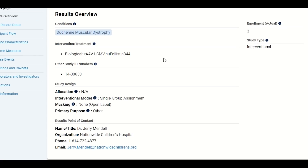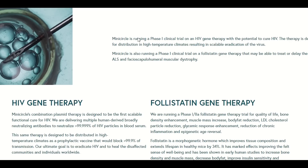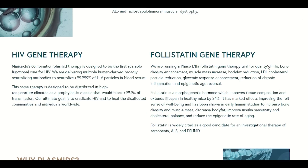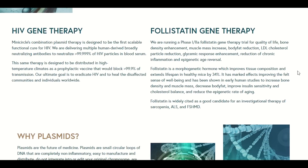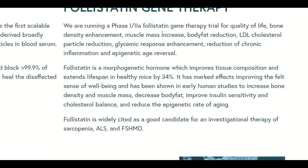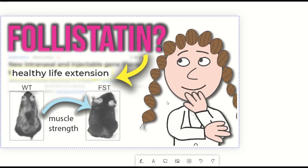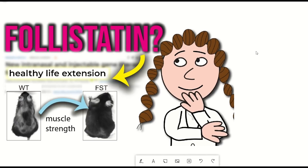There is also a company, MiniCircle, that is using an alternative approach with gene delivery to give patients follistatin. Ultimately, it will be important to find an optimal mode of delivery. While there isn't much data yet to go by, it seems like this could be a promising approach.